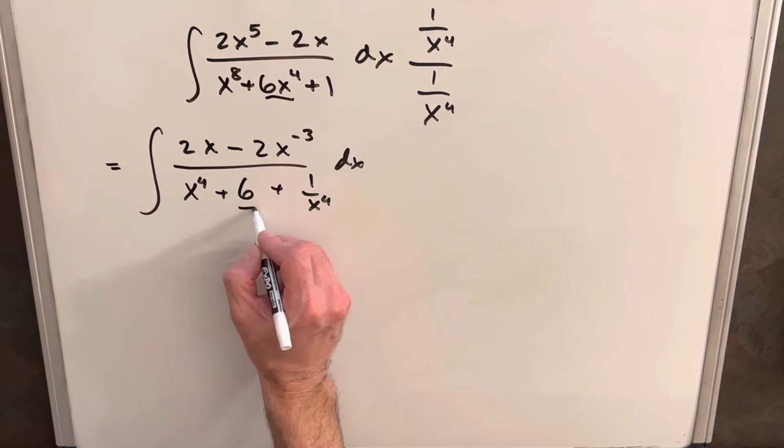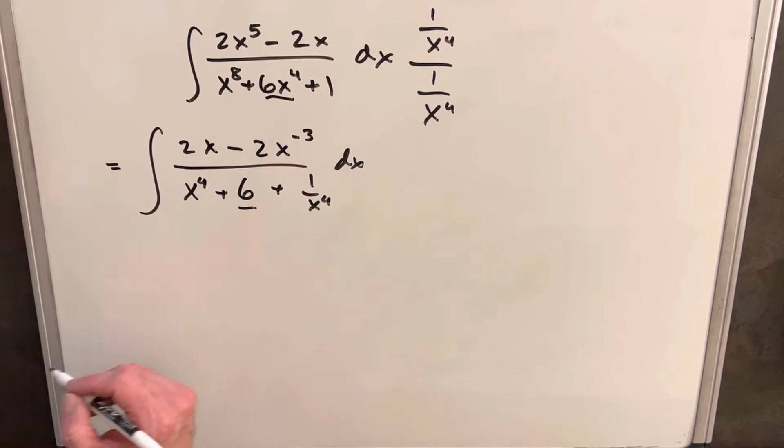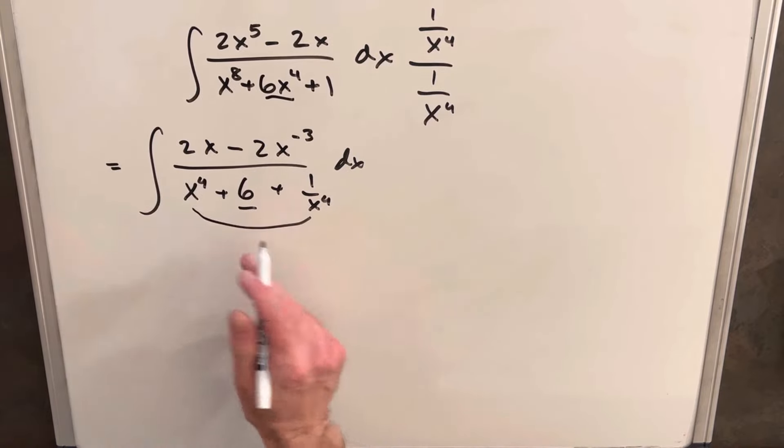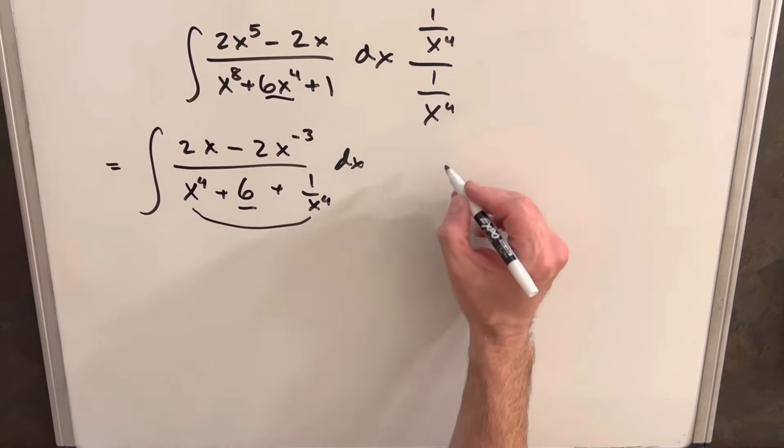And like I mentioned, see now this is just a number here, and we've taken the x out of it. And now we want to do factoring in the denominator. We have this x to the 4th and 1 over x to the 4th we can play with.